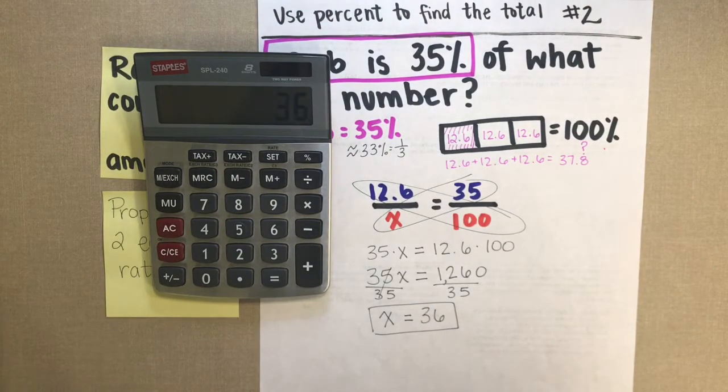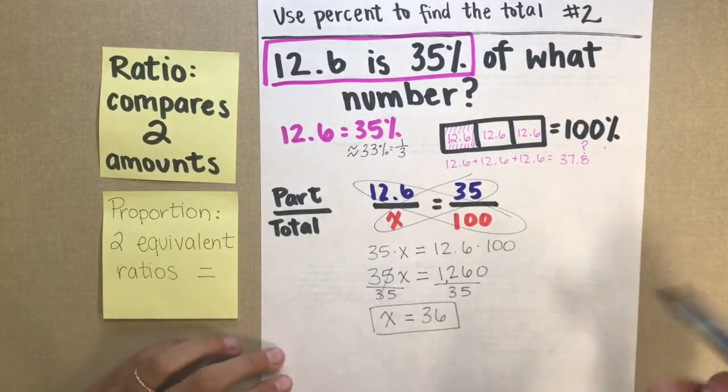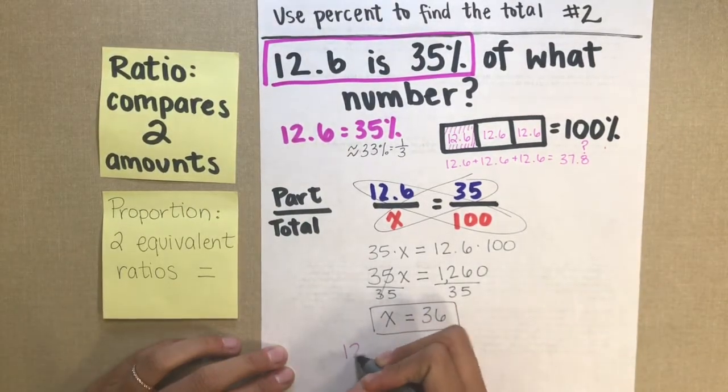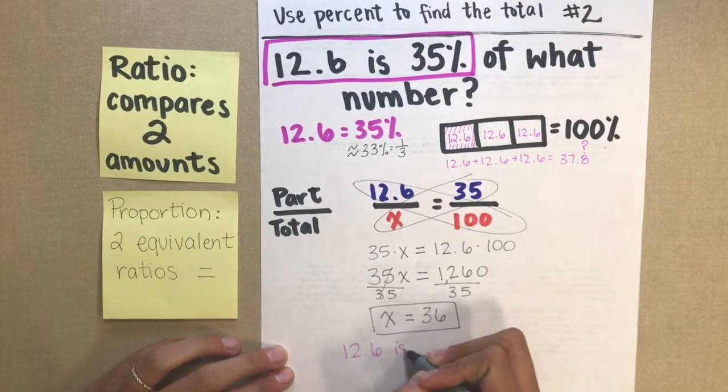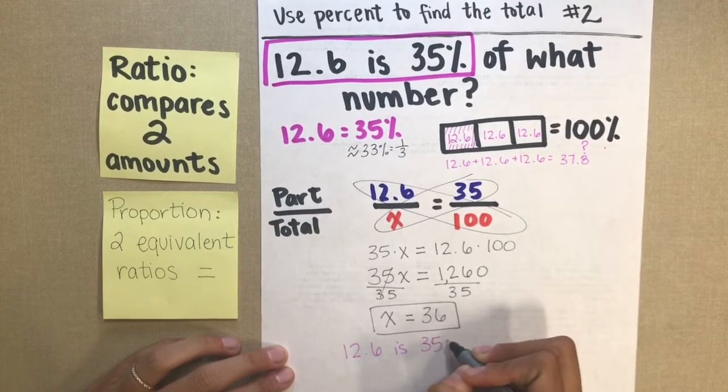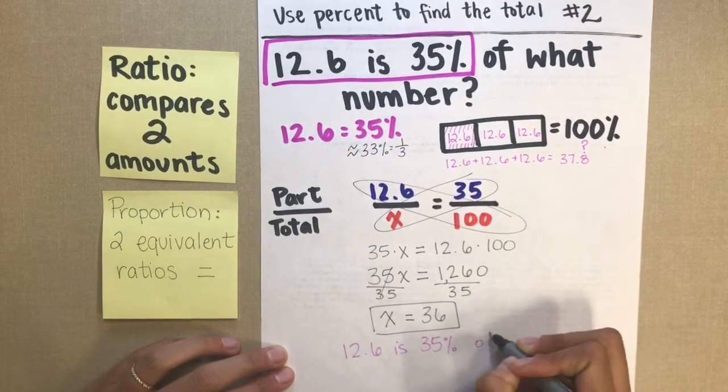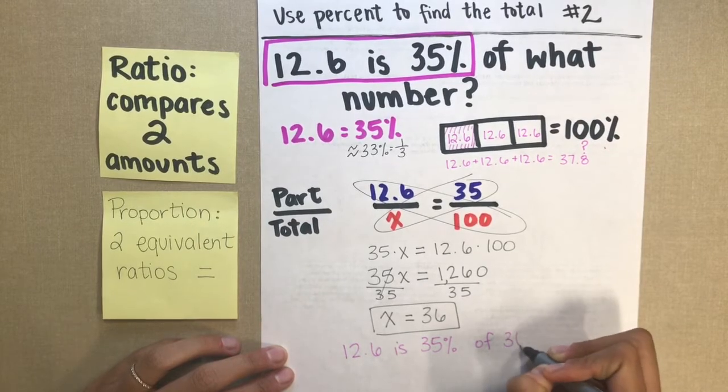This means that the total amount is equal to 36. So 12.6 is 35% of 36.